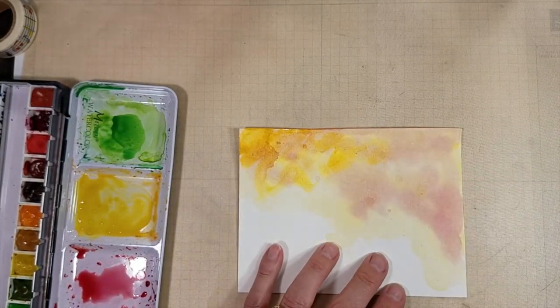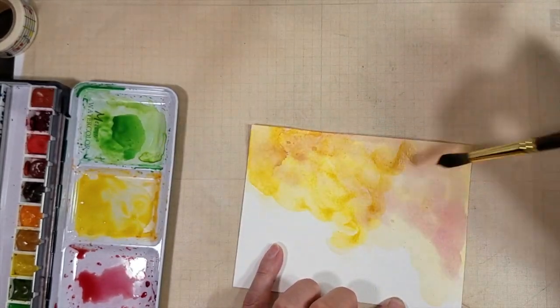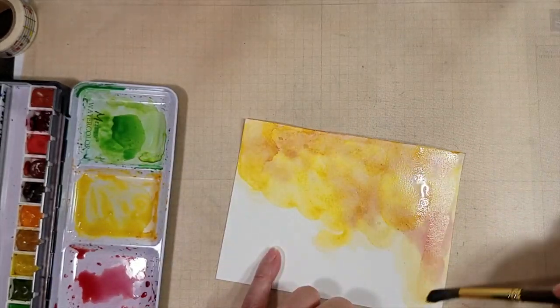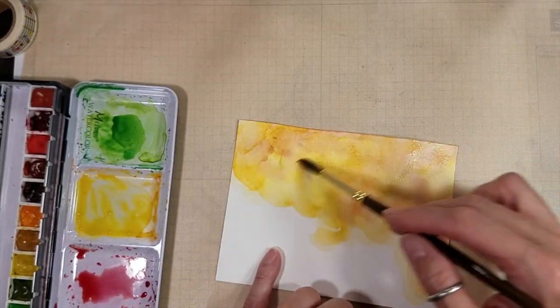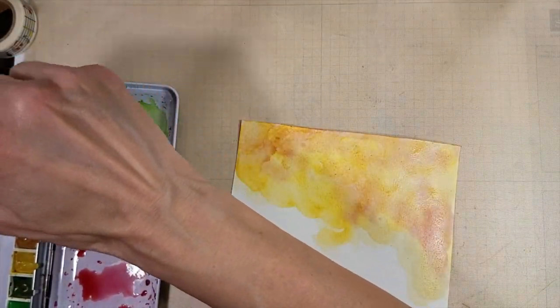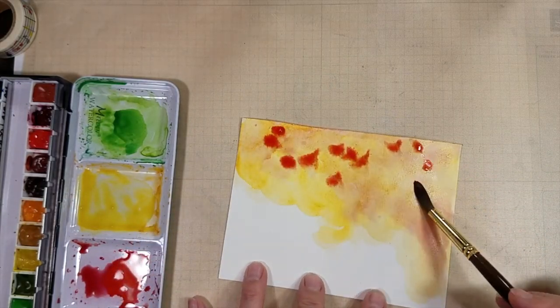So I dried that with my heat gun. And you will see that watercolors, as usual, dry back much lighter than they appear when you first put them on. The secret is layering. Add more layers. And you don't have to be careful. This is really just a very rough technique. This time, anyway.